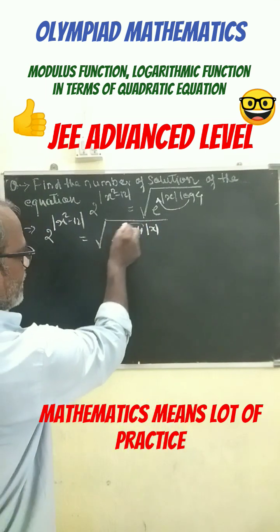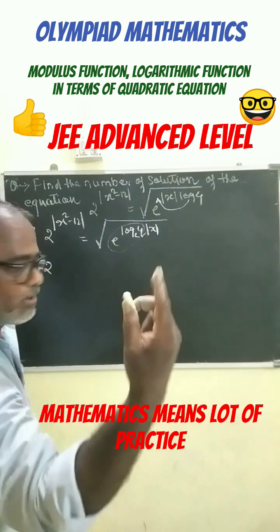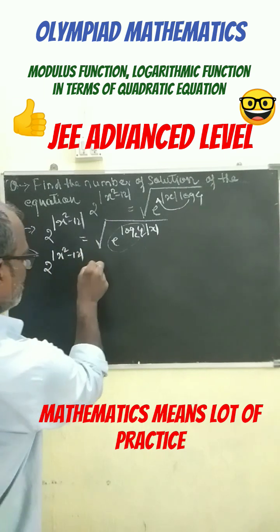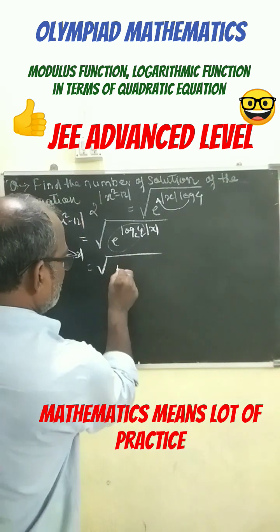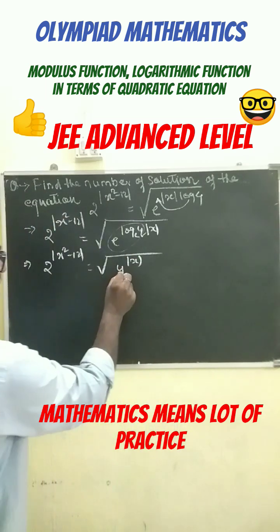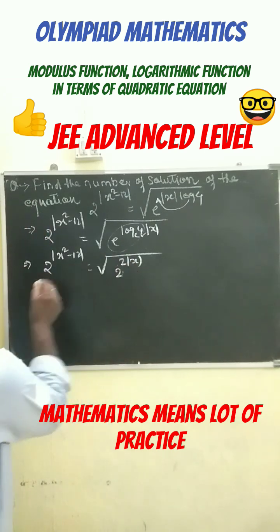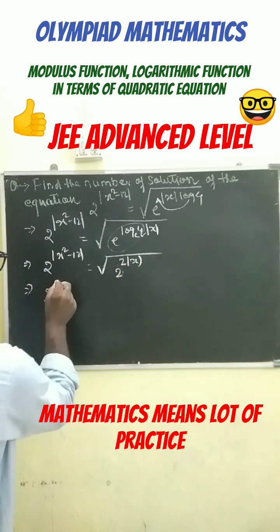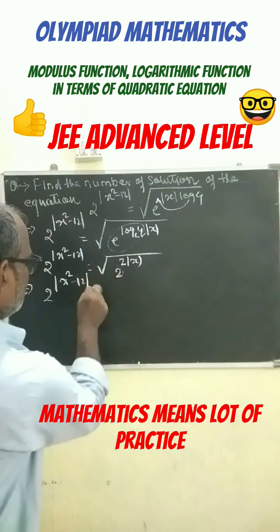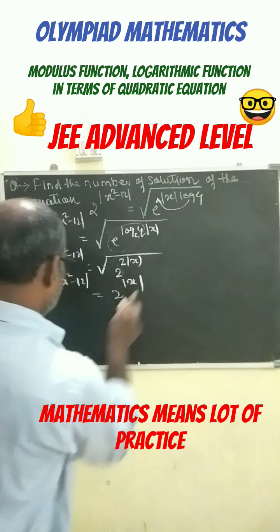We know that by the property of logarithm the answer will be 4, that is 2. So 2 to the power of mod x squared minus 12 is equals to root over 4 to the power of mod x. This can be written as 2 to the power of mod x squared minus 12 equals to 2 to the power of mod x.